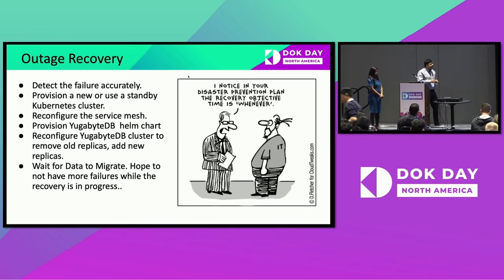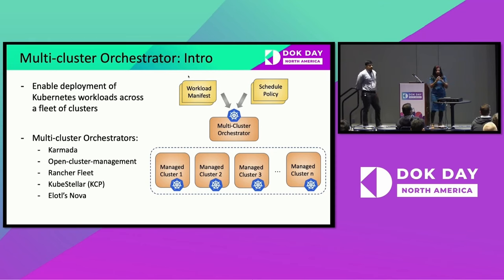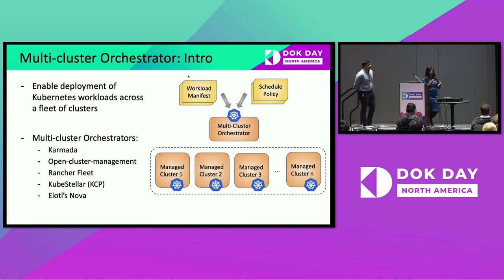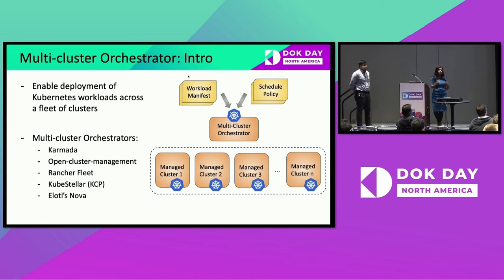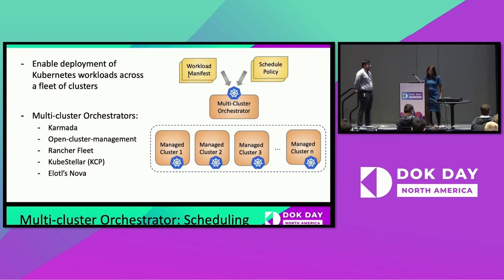A Multi-cluster Orchestrator is a control plane that enables deployment of Kubernetes workloads across a fleet of clusters. There are a number of orchestrators now available: Karmada from Huawei, OpenCluster Management and ACM from Red Hat, Rancher Fleet, KubeStellar and KCM contributed by IBM Research and Red Hat, and Elotl's product, Nova. The input is your typical set of workload manifests plus a scheduling policy, which is the core essence of how these orchestrators work.